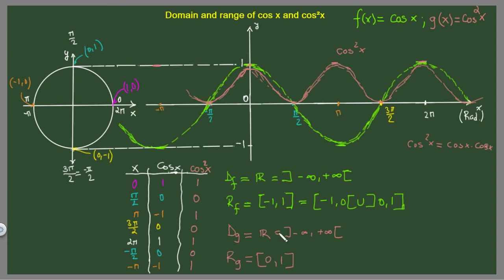This is how you find the domain and range of cosine squared of x. Remember, the cosine table of values really helps — all you need to do is square all the cosine values to get the values of cosine squared. Thank you for watching, guys. Until next time, bye.